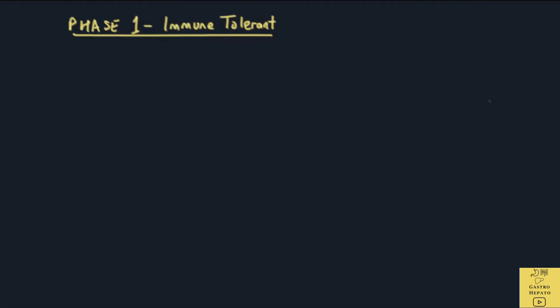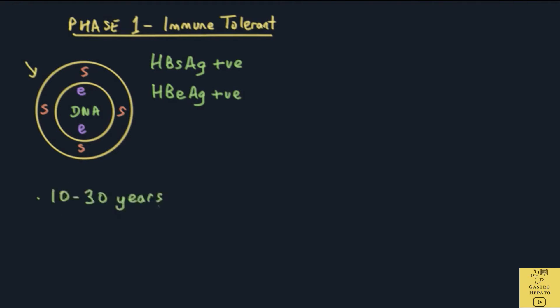Let's now look at the first phase, the immune-tolerant phase. This is how the hepatitis B virus looks like in the immune-tolerant phase. The blood test will show that the HBsAg is positive and the HBeAg is also positive. This happens after the patient first gets infected and it can last from anywhere between 10 to 30 years or longer.